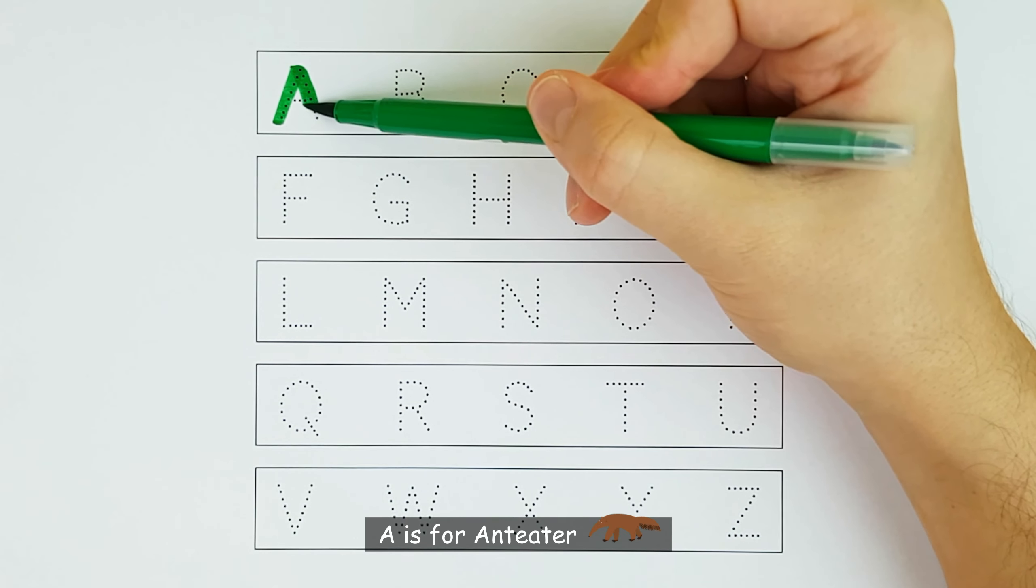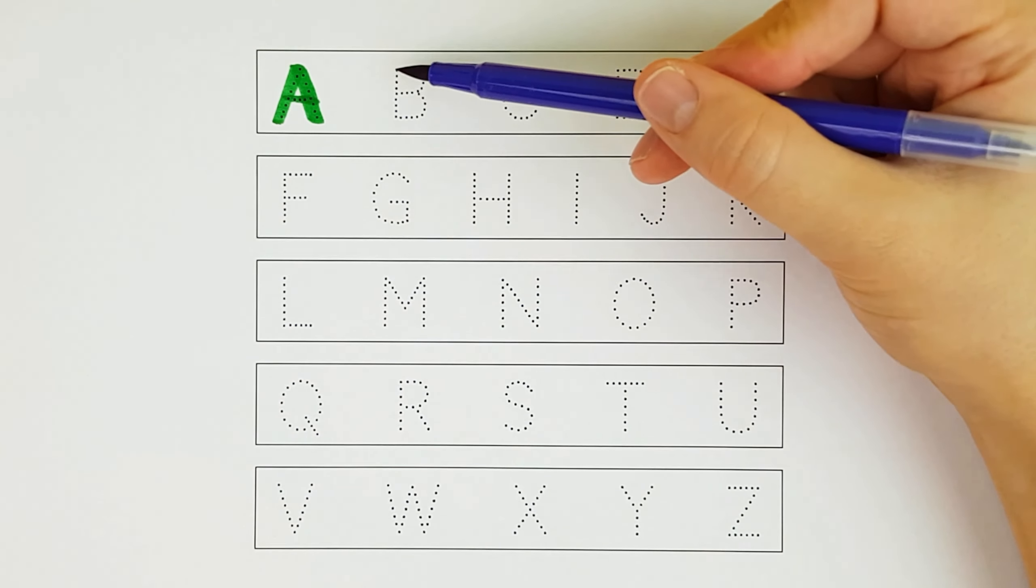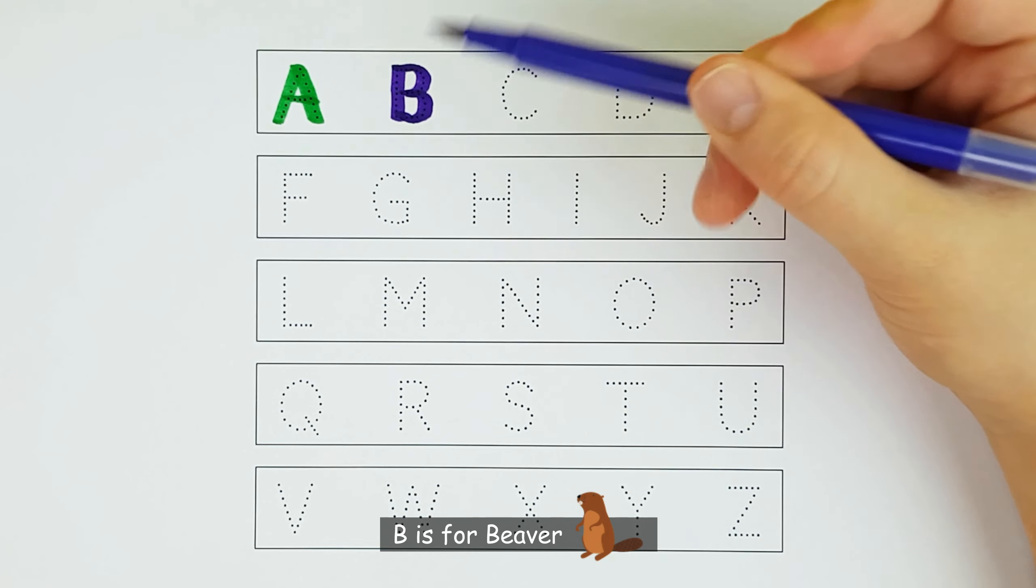A. A is for Anteater. A. B. B is for Beaver. B.